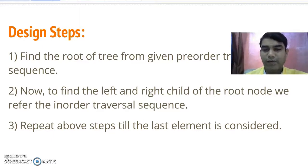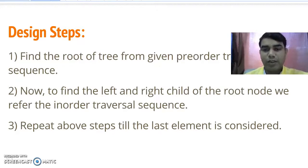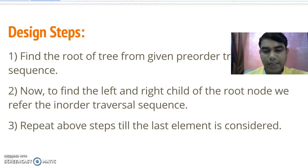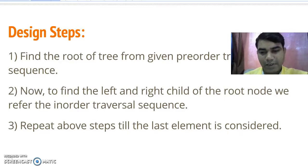We need to first locate where the root appears in the in-order traversal sequence. After that, the elements which appear on the left hand side of the root node are placed in the left subtree. In the last step, we repeat all the above steps till the last element is connected.